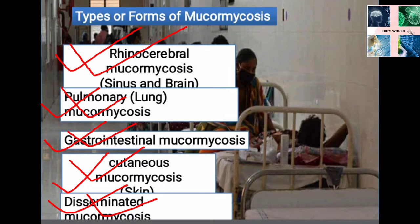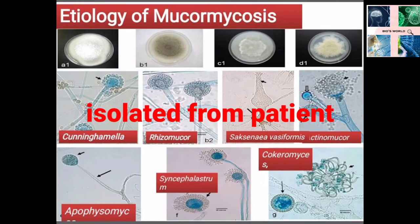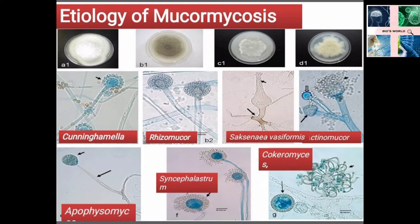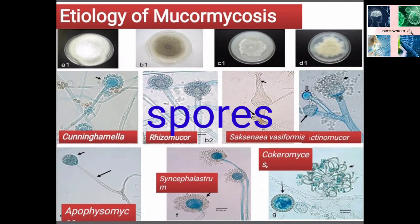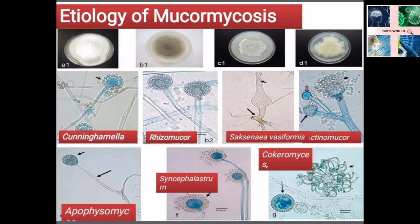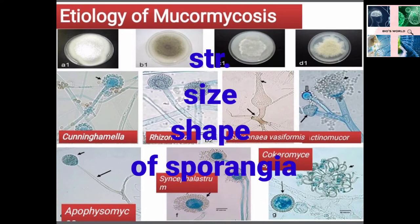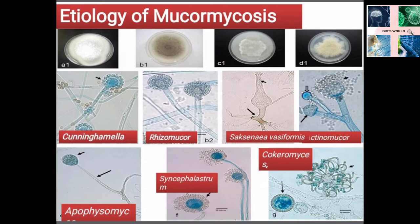Regarding etiology, Rhizopus species is the most common cause of mucormycosis. The etiology differs considerably in different countries. These species exist as spores and thrive in dry, humid and arid conditions. Most species are differentiated based on characteristics like structure, size and shape of the sporangia, color and state of the spores, and the mycelium. The mycelium is unseptate or irregularly septate, and the anamorphic sporangia spores produce multi-spore sporangia. Mucormycetes can be observed when stained by lactophenol cotton blue.